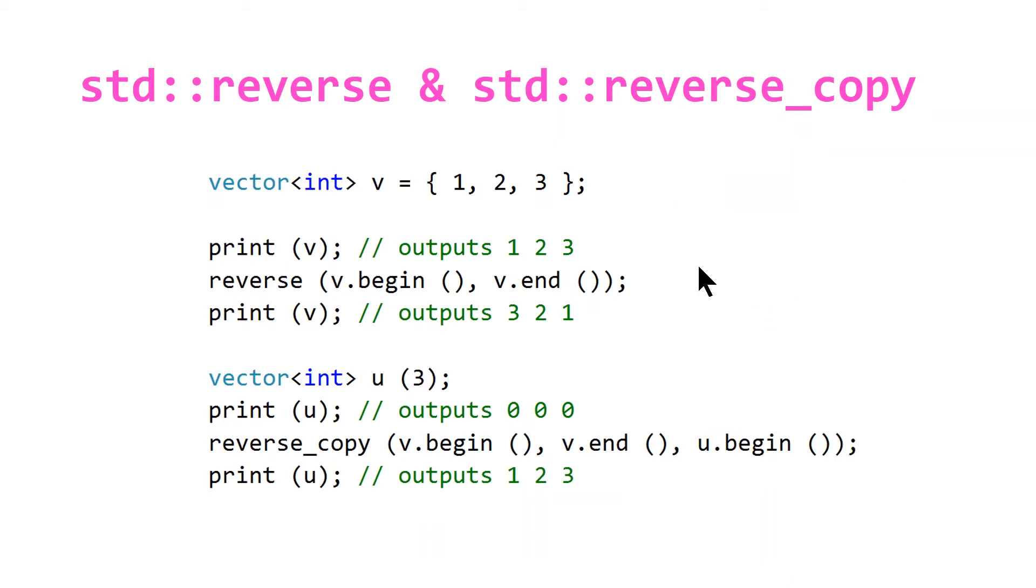We print this out, it obviously is just going to print out 1 2 3. And then if we reverse, passing the begin and past the end iterators, and then print it, it'll print it in a reversed order from what it initially was. So pretty straightforward.